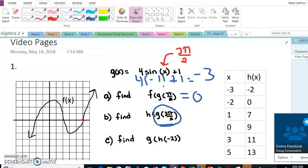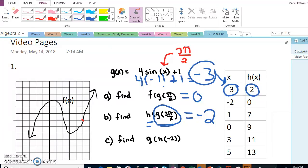So negative 3 is the answer to this first part. We're going to plug negative 3 into the h function this time, because h is outer. And so here, x is negative 3, so that means h of x is negative 2. That's our answer, because we got a negative 3 and plugged it in for x.